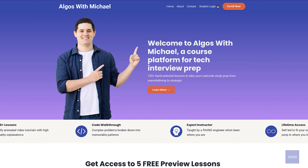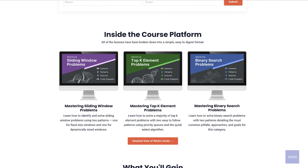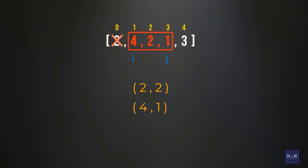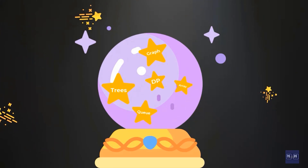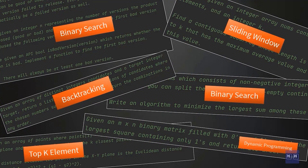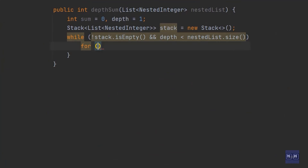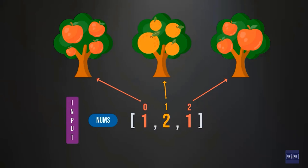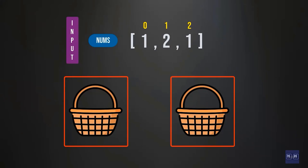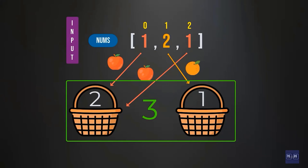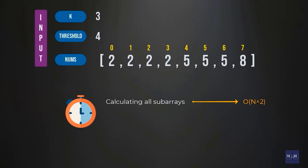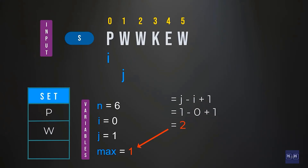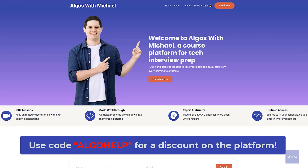Before we get started, I wanted to tell you about my technical interview prep platform, Algorithms with Michael. If you're preparing for coding interviews, I really recommend checking it out. It's different from other coding prep websites because I actually teach you the patterns to solve different categories of interview problems such as sliding window, top k element, and binary search. Learning the patterns is what's going to allow you to feel confident in a wide breadth of different topics. For my YouTube audience, you get a discount using the code ALGOHELP.